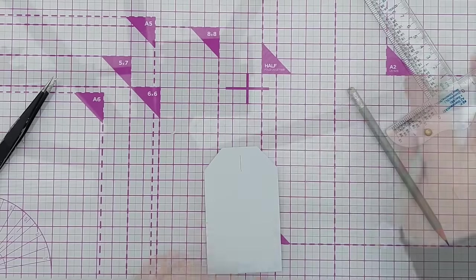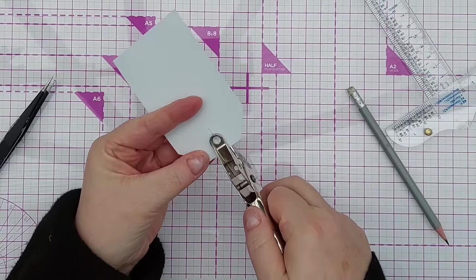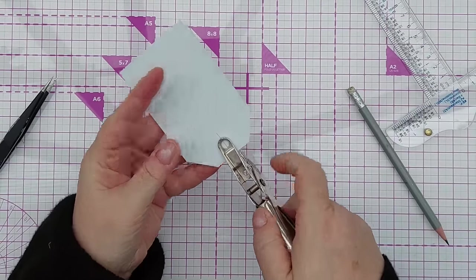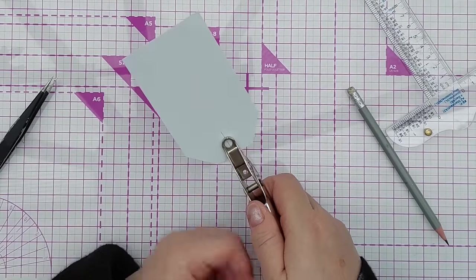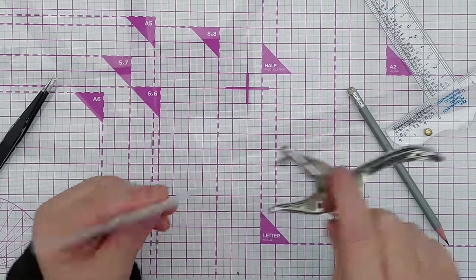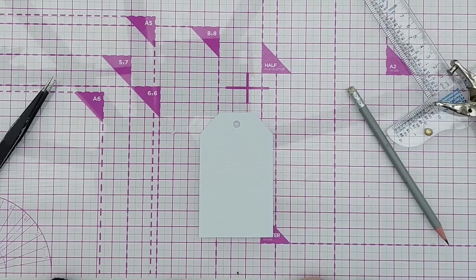And then all you've got to do is measure halfway, draw a line, and then take your single hole punch and line it up so that that line is going across the diameter of the circle. And there you have a tag where everything is where you want it.